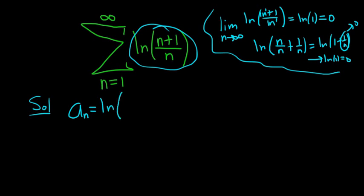So I'm going to set a sub n equal to ln of n plus 1 over n. And using the properties of logs, we can write this as the natural log of n plus 1 minus the natural log of n.